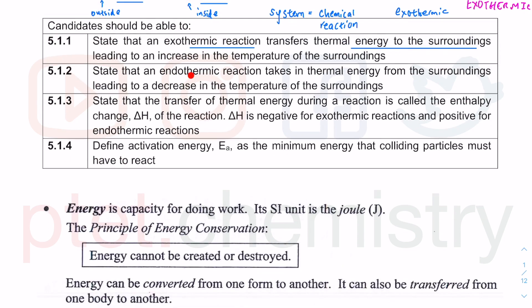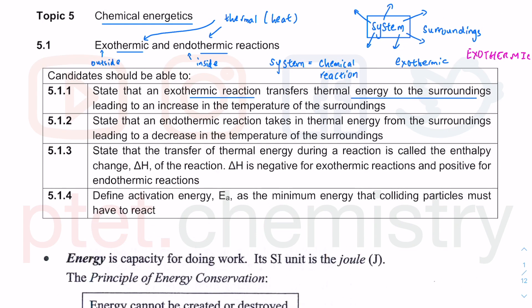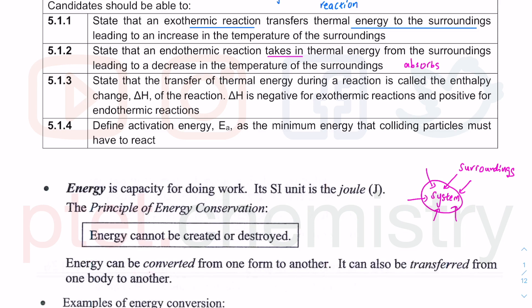On the other hand, you have endothermic reactions. Instead of being released out, the system will absorb energy from the surrounding. The surrounding will lose the energy; when the surrounding loses energy, it loses kinetic energy, particles travel slower. Temperature is a measure of average kinetic energy of the particle, so as particles move slower, they lose energy to the system. The surrounding decreases in temperature as a result of conservation of energy.